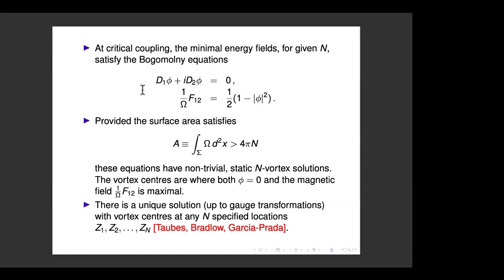The first Bogomolny equation says D̄φ = 0, so φ is holomorphic in this background gauge. The second equation involves the magnetic field: F₁₂ divided by the conformal factor Ω gives a scalar — the magnetic flux per unit area — and that equals a certain expression. This pair of Bogomolny equations comes from the Bogomolny rearrangement for minimizing the energy, and the magnetic field expression arises in terms of what you might recognize as a moment map.